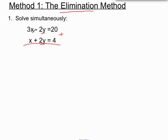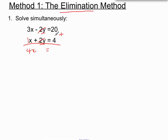So we have to add the x terms together, the y terms together, and the normal numbers together, and see what we are left with. We can think of this as having an invisible one in front of it. 3x plus x will be 4x. The minus 2y and the 2y will cancel each other out, which is what we want. And 20 plus 4 is 24.